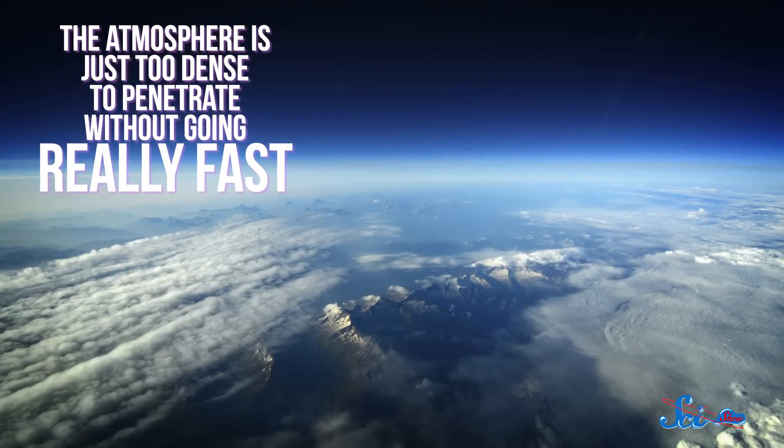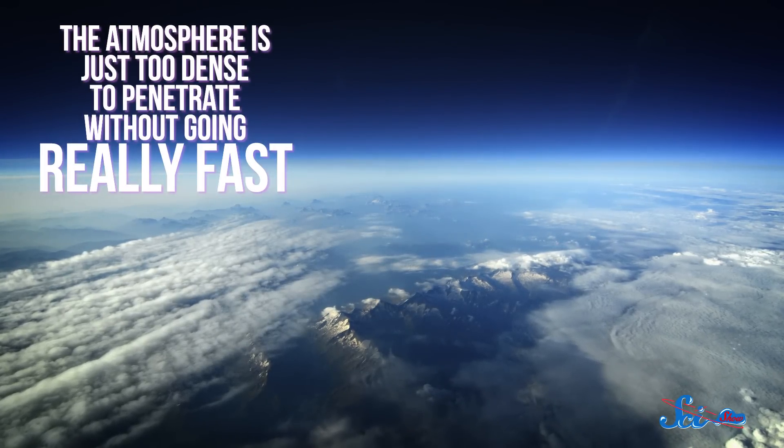So why don't the space pilots simply slow their craft way down and avoid the gs? Well, because the atmosphere is just too dense to penetrate without going really fast. Traveling at less than 7,700 meters per second — that's about 28,000 kilometers an hour — would just result in your craft bouncing right off the atmosphere.